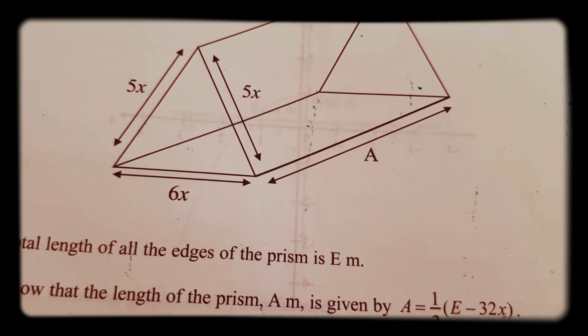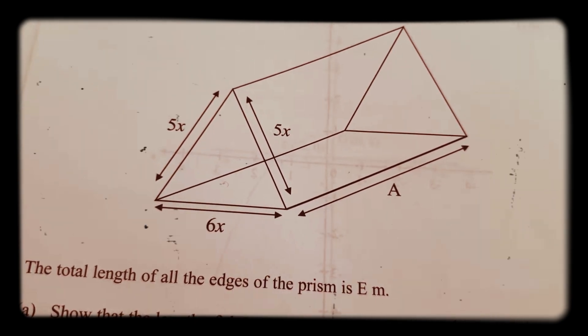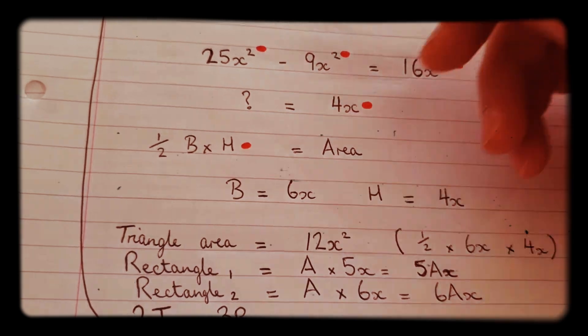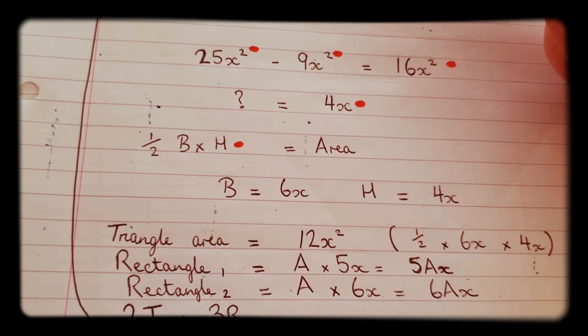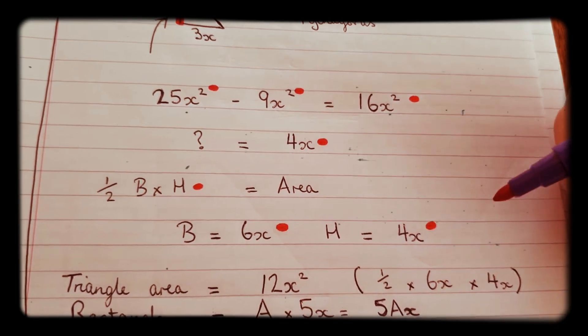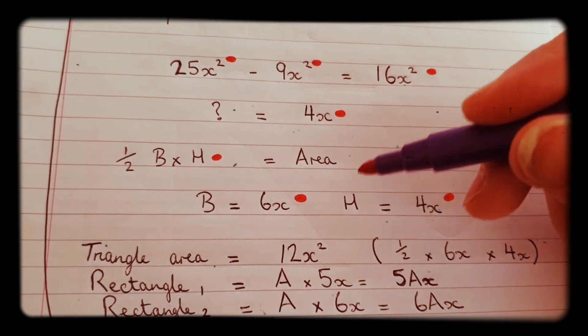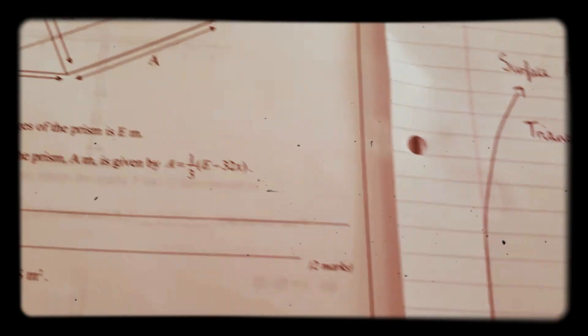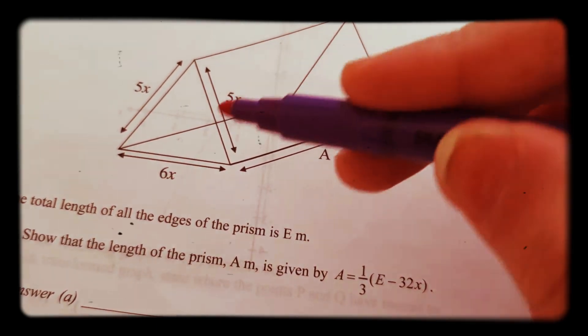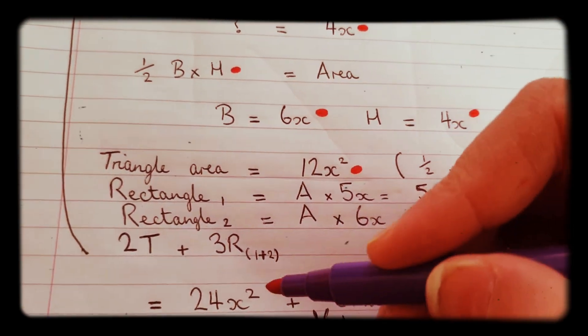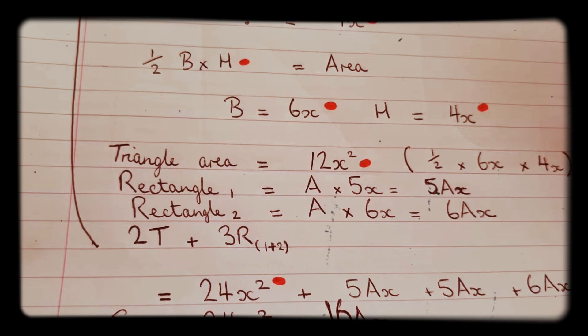Now we can start working out the surface area of the whole thing. Let's apply half base times the height to get the area of the triangle. 6x was the base and 4x is the height, so the triangle area is 6x times 4x times half which makes 12x squared. Now remember that we have two of these triangles, so times it by 2 and we get 24x squared for the triangles.